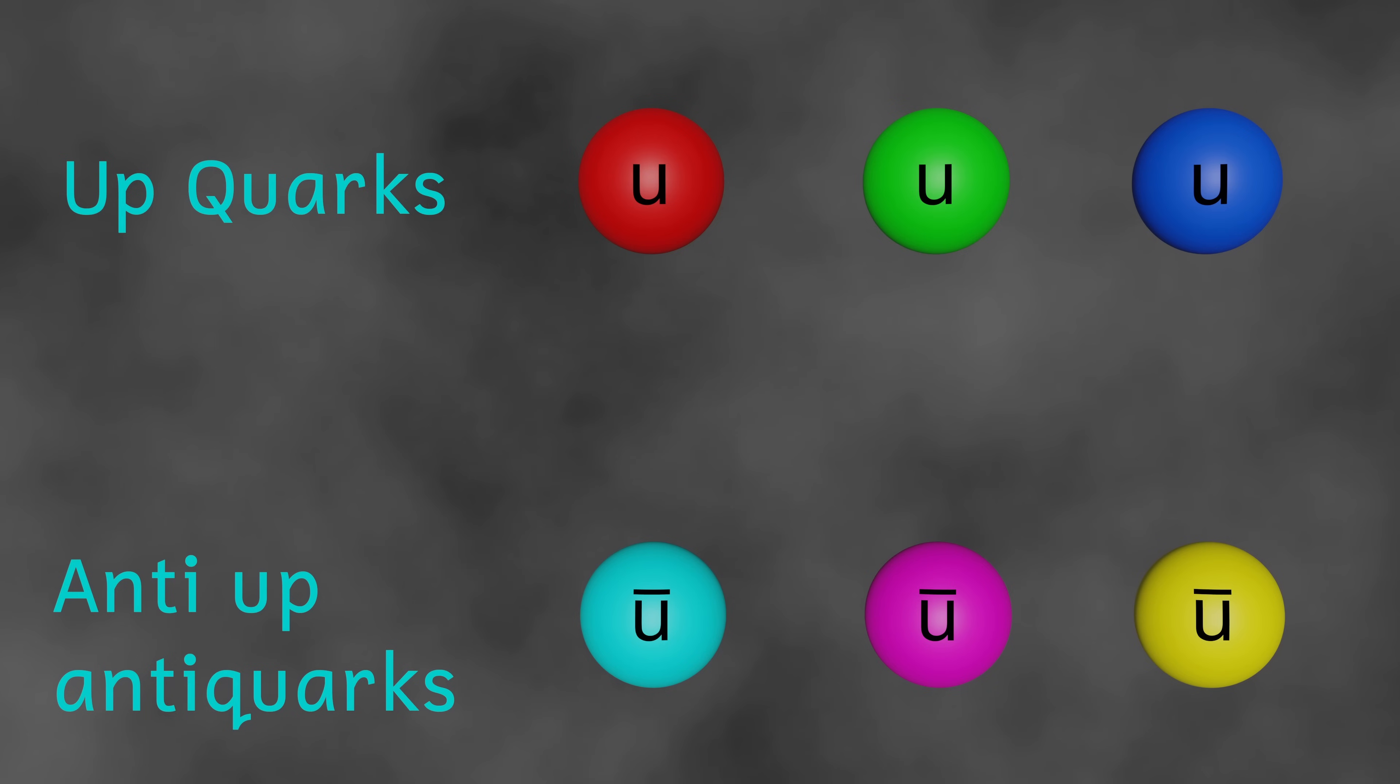Also, the color of a quark is independent of its flavor. This means that I can have up-quarks, which are red, green, and blue. And up-anti-quarks, which are anti-red, anti-green, and anti-blue.